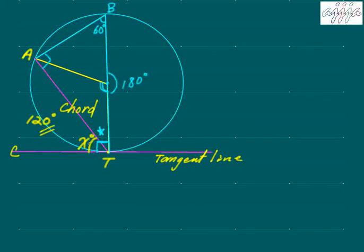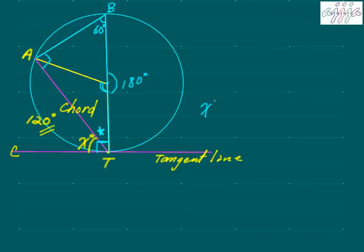So star plus x makes 90 degrees. Now look at triangle ABT — the angles inside also sum to 180 degrees. This one is 90, so that means star plus 60 also equals 90. Since star plus x equals 90 and star plus 60 equals 90, you can tell right away that x equals 60 degrees.